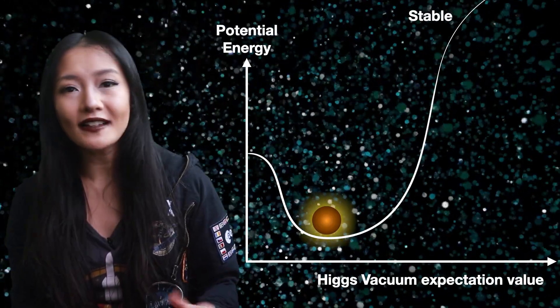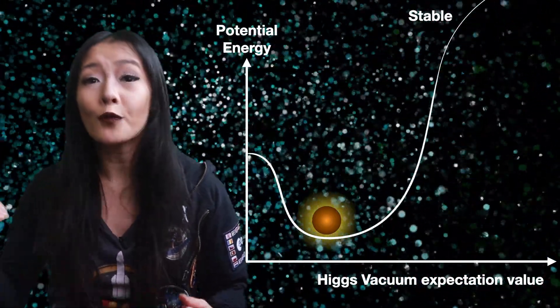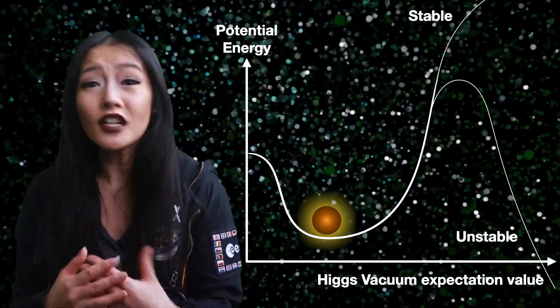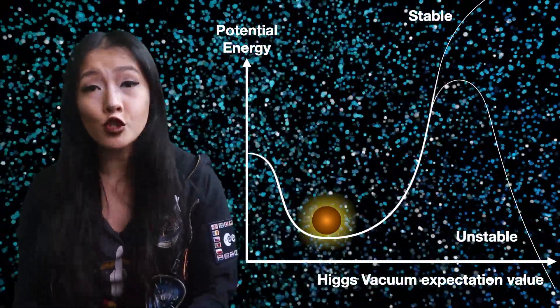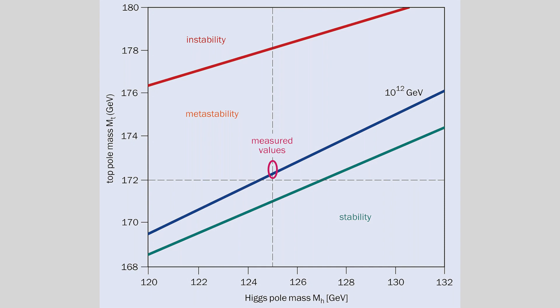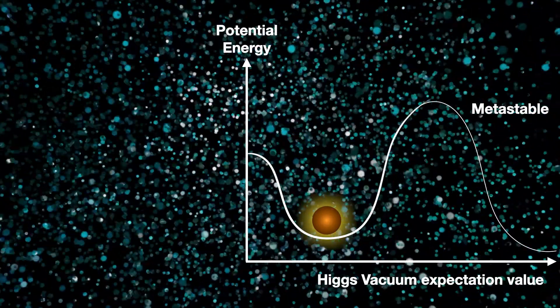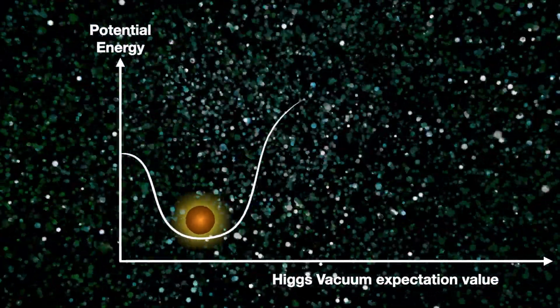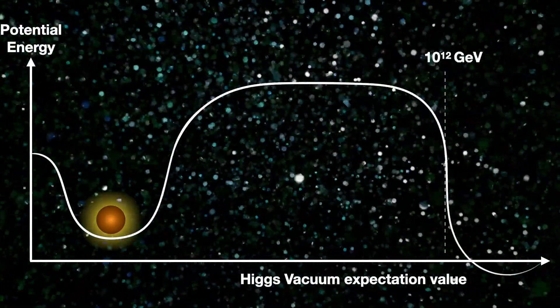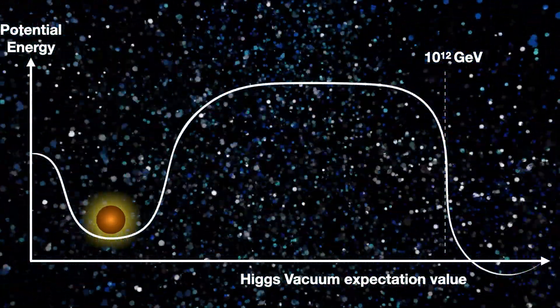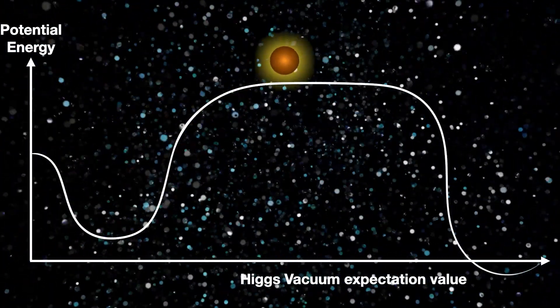If the system is stable, then we can expect the edge of the Mexican hat to keep extending upwards infinitely. But if it's unstable, then at some point you'd expect the hat to start to turn down again. It turns out that the value of the Higgs boson mass of about 125 gigaelectron volts suggests that the vacuum state of the universe is located near the boundary between being stable and being metastable. In other words, there could potentially be an even lower energy state. The latest calculations suggest that the potential turns over at about a vacuum expectation value of 10 to the 12 gigaelectron volts, and then it will turn negative.